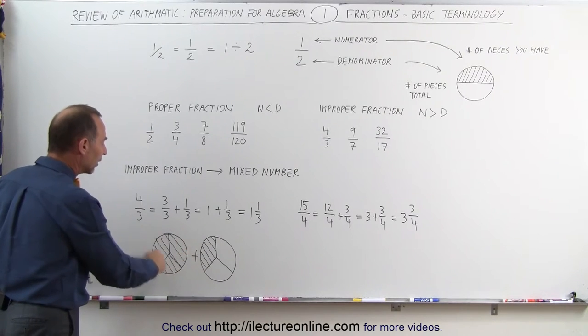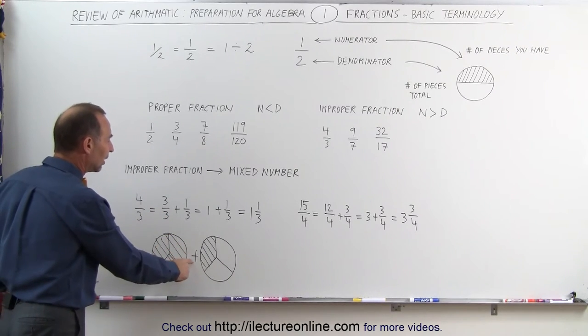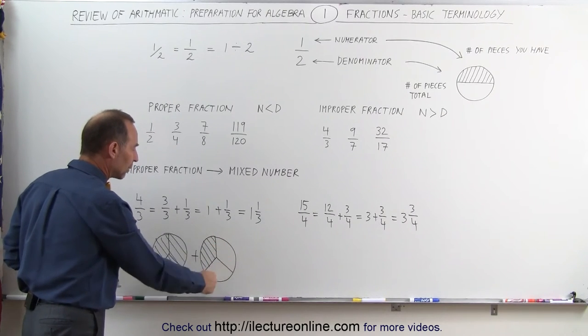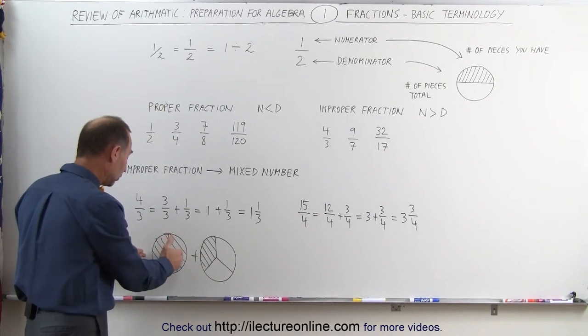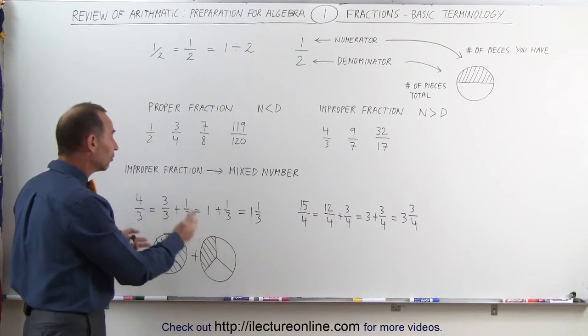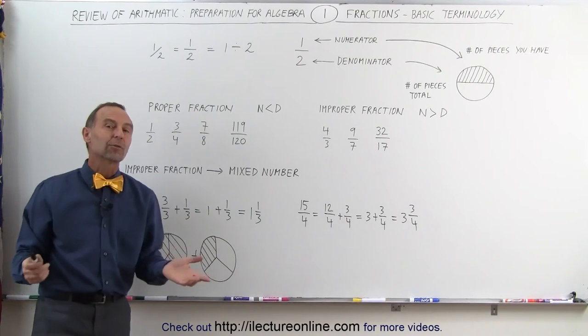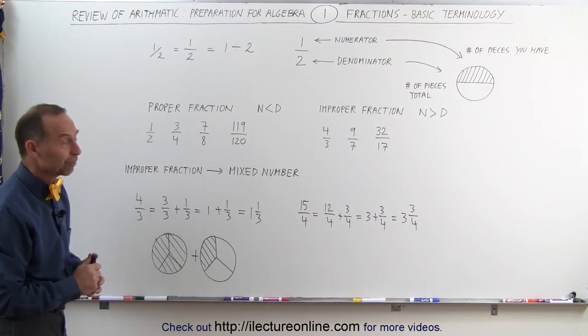3 divided by 3, plus here we have another circle that has 3 parts, but we only have one of those 3 parts that represents 1 third. So 3 thirds plus 1 third gives us 4 thirds, or 1 and 1 third. So that's a visual representation of what a mixed number is.